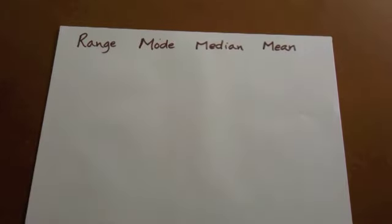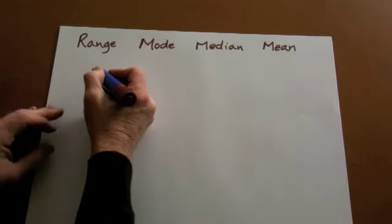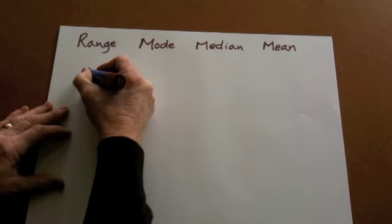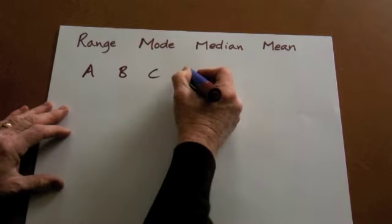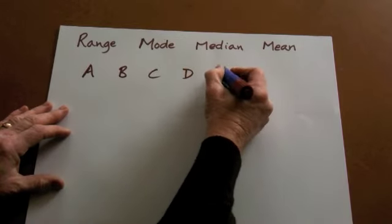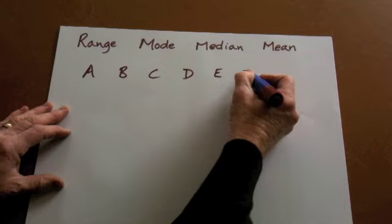So let's take an example. Supposing there are seven children having a spelling test. So we'll call one of them A, one of them is B, C, D, E, F and G.